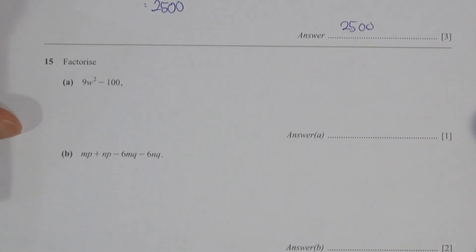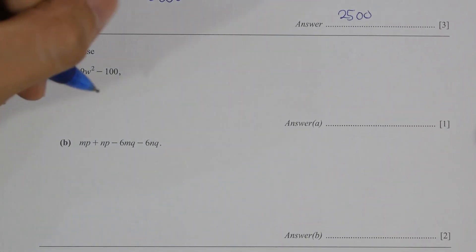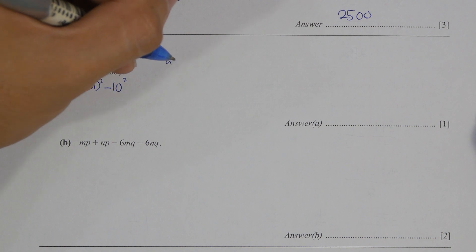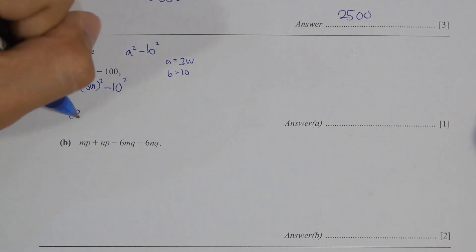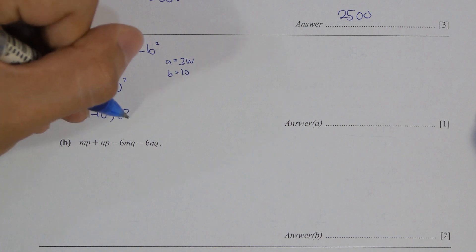For question 15, this one is actually A squared minus B squared formula. So A in our case here, the formula will be 3W, and for B it will be 10. So with formulas, the answer will go by 3W minus 10, 3W plus 10.